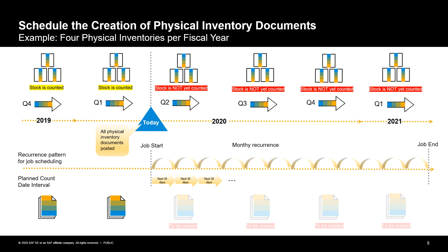The time series in the upper third of the figure shows a group of materials to be counted quarterly. The physical inventory documents are already posted in the system up to the first quarter Q1 in 2020, as shown in the lower third of the figure. Today is the beginning of the second quarter of 2020. Your task as an inventory manager is now to schedule the physical inventory count for these materials in the following four quarters.